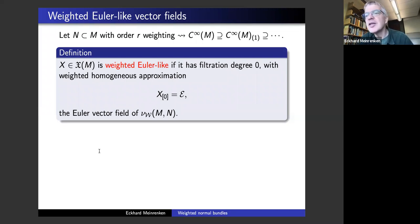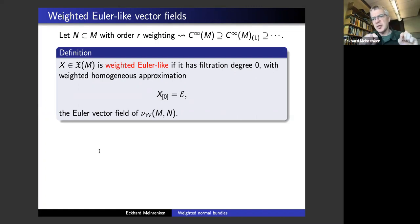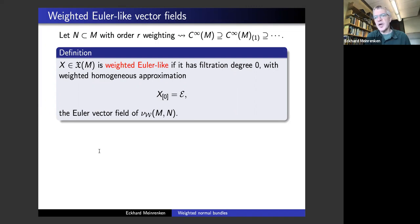Someone in the audience asks for a reminder of what R is. We start out with a weight sequence, and R is the largest weight that appears. So the simple setting is R equals 1, which is just the usual trivial weighting where you just look at order of vanishing. Then you could have R equals 2, where you also involve weights two, and so on. This is the R that appears in the story.